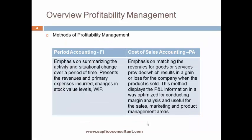In FI, emphasis is on summarizing the activity and situational change over a period of time. It presents the revenue and primary expenses incurred, changes in stock value levels and WIP — it is called period accounting in FI. Whereas profitability analysis is more of a cost of sales accounting method, with emphasis on matching the cost of goods sold with the revenues. This method is more suitable for conducting margin analysis and useful for the sales, marketing, and product management areas.